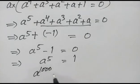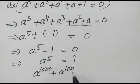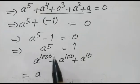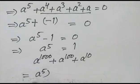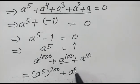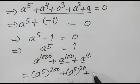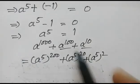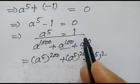Now we have to find the value of a¹⁰⁰⁰ + a¹⁰⁰ + a¹⁰. We can write this as (a⁵)²⁰⁰ + (a⁵)²⁰ + (a⁵)² = 1²⁰⁰ + 1²⁰ + 1² = 1 + 1 + 1, which equals 3.